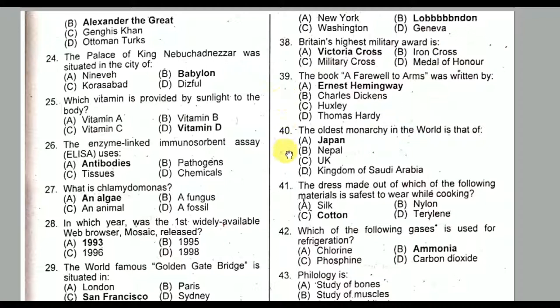Question number forty: The oldest monarchy in the world is that of Japan. This is also a previous paper MCQ. Question number forty-one: